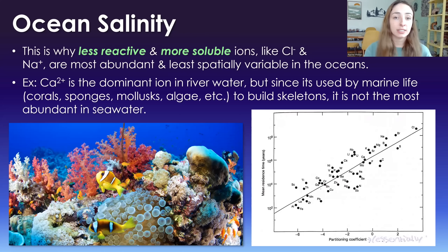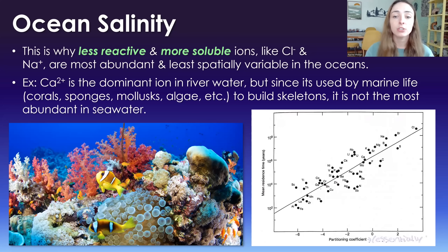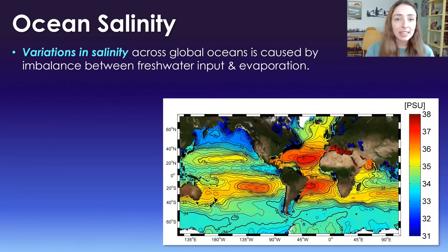Calcium, on the other hand, is really abundant in river water and input to the ocean, but since it's used by marine life like corals, sponges, mollusks, and algae to build calcium carbonate skeletons, it is not the most abundant ion in seawater because it is used up for that — and that is one of the ways it is removed from the water.